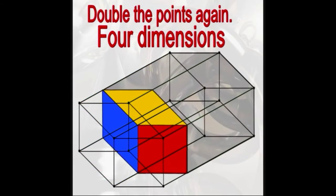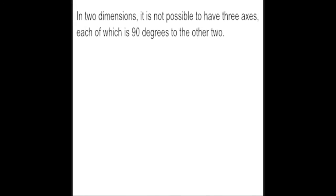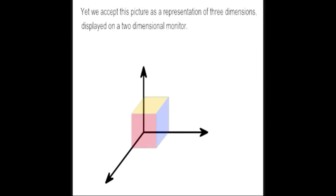Skeptical? You're watching this on a flat, two-dimensional computer monitor. In two dimensions, it's not possible to have three axes, each of which is 90 degrees to the other two.